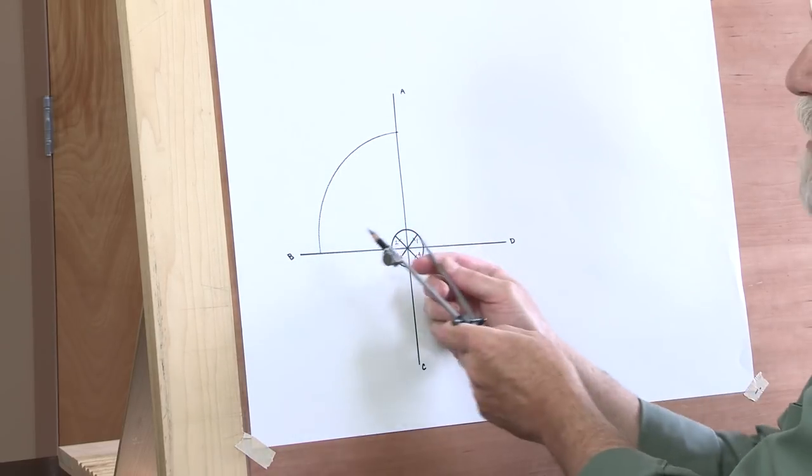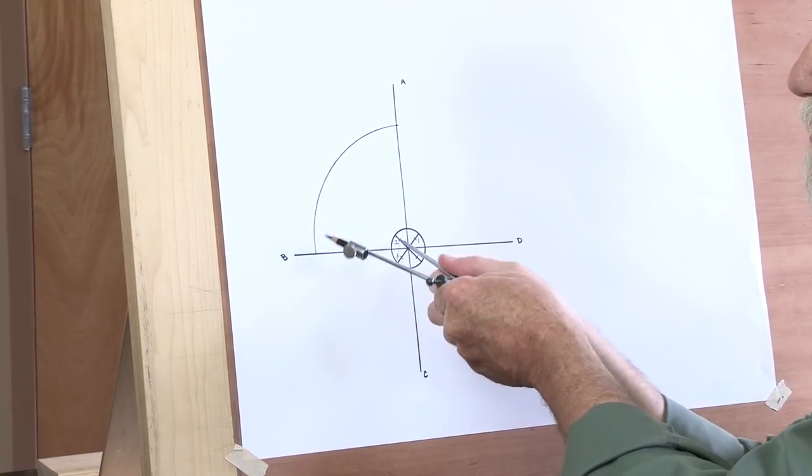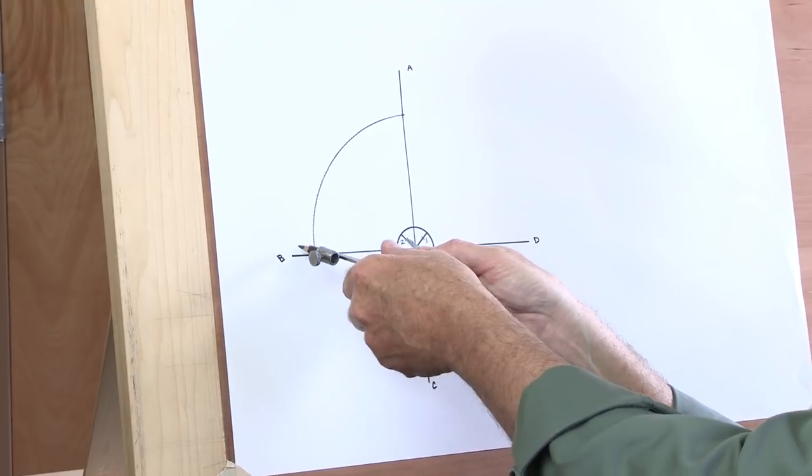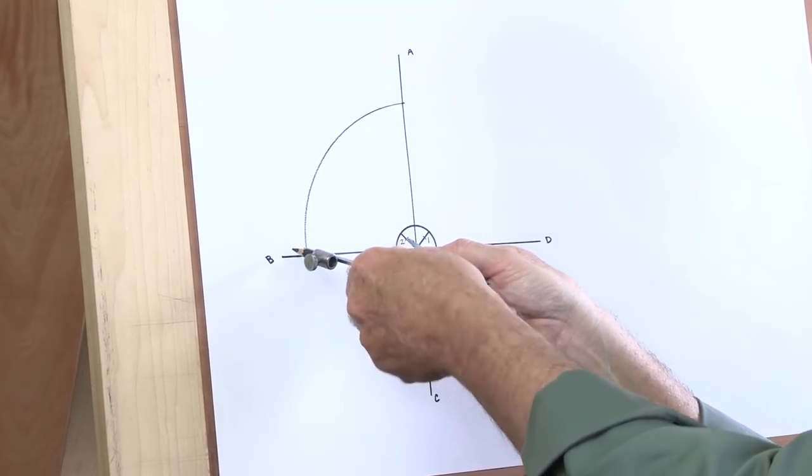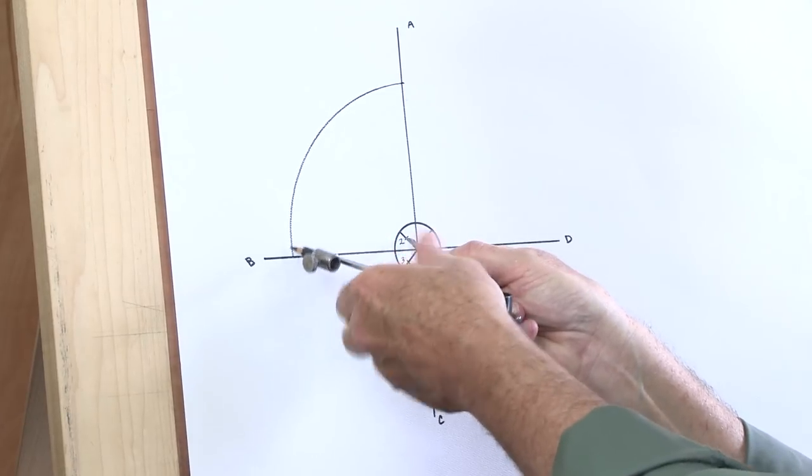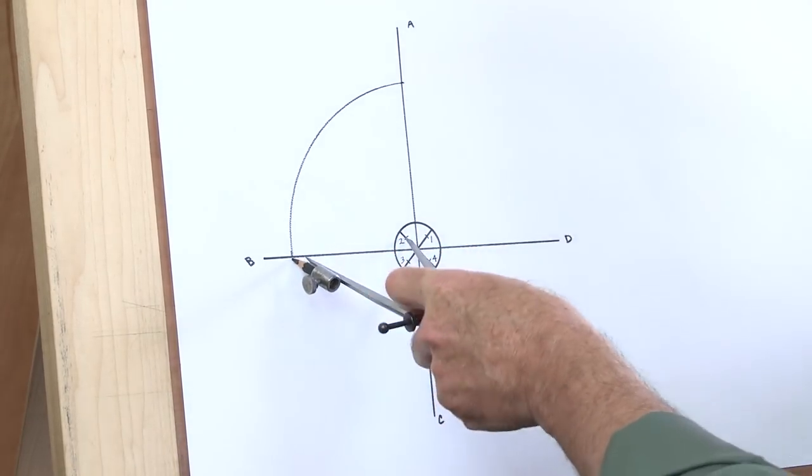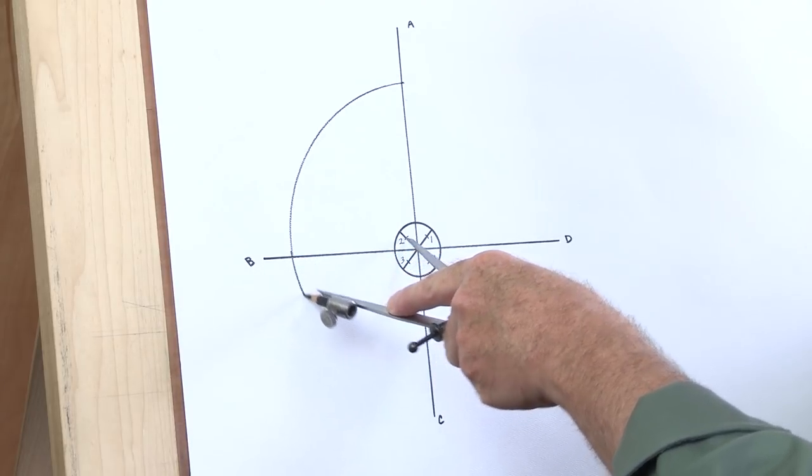Now I move my pivot point over to the second reference, marked two. You can see that moves the pencil out further, so I adjust my pencil, screw it in until it blends. Then I draw another quarter circle.